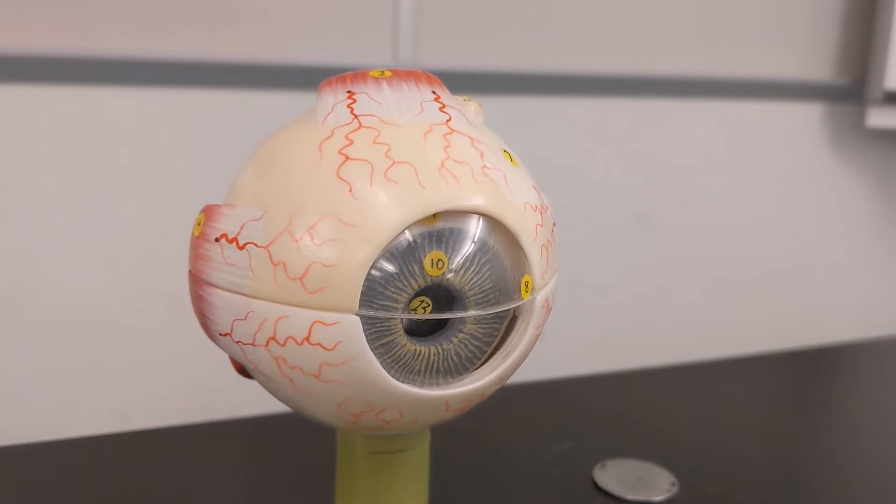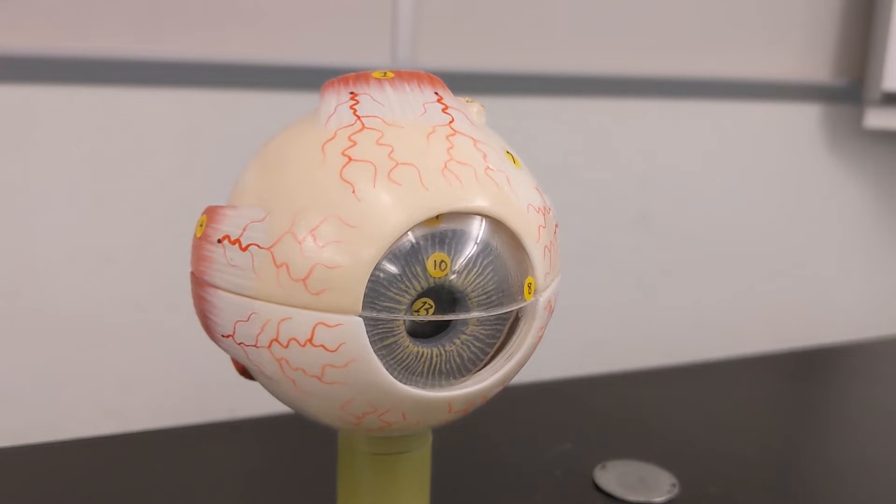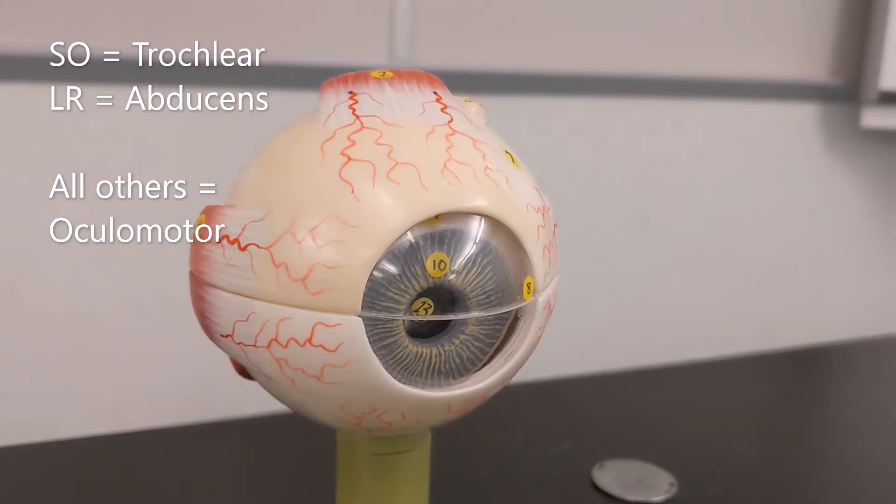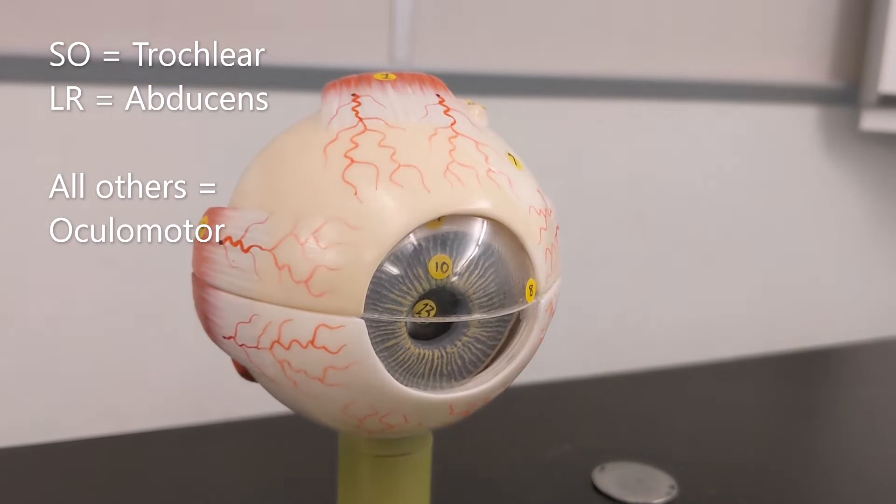All of the other muscles, the superior rectus, inferior rectus, medial rectus, inferior oblique are all controlled by the oculomotor. Lateral rectus, superior oblique are not.